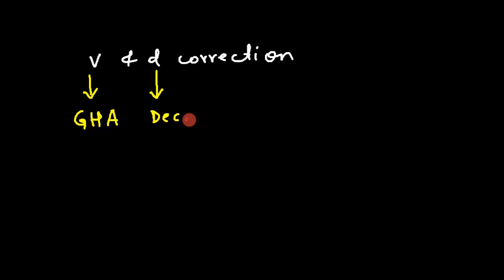Hi, in this video I am going to discuss V and D corrections. V correction is used for computation of GHA, which is hourly Greenwich hour angle, and D correction is used for declination.